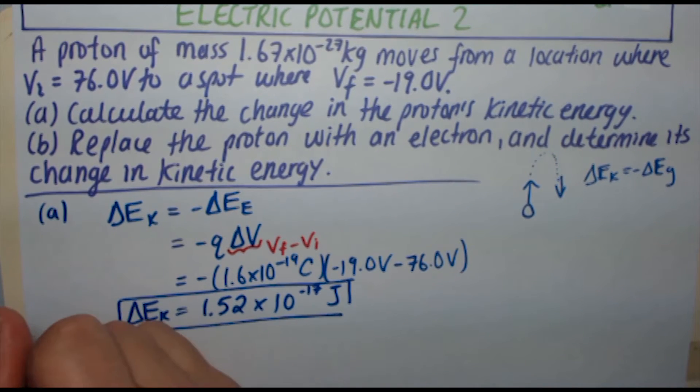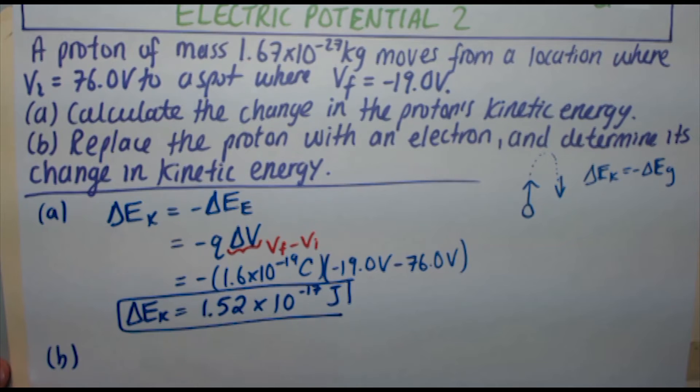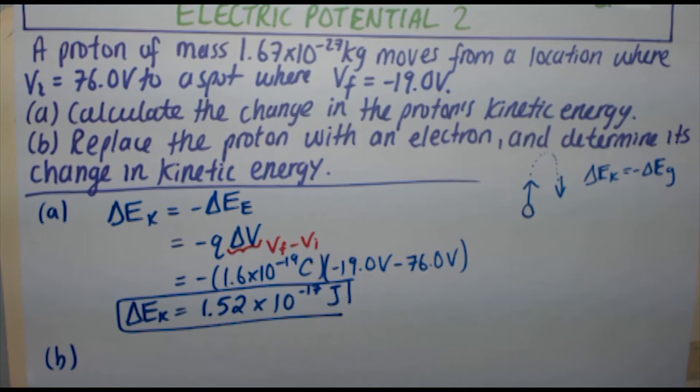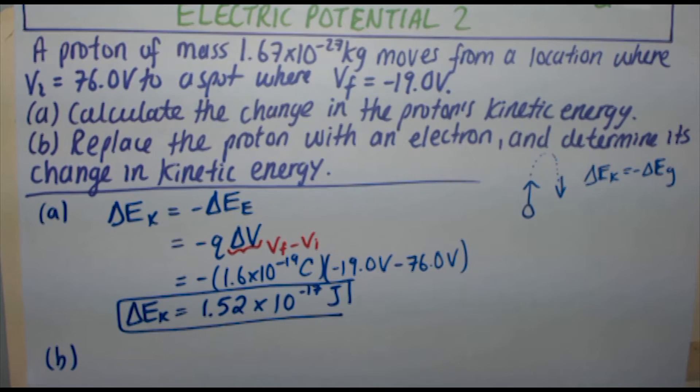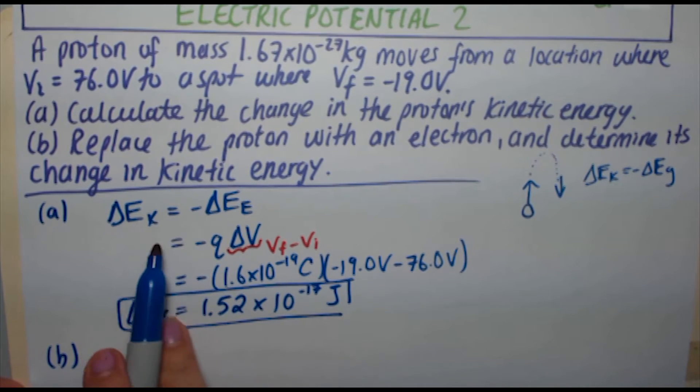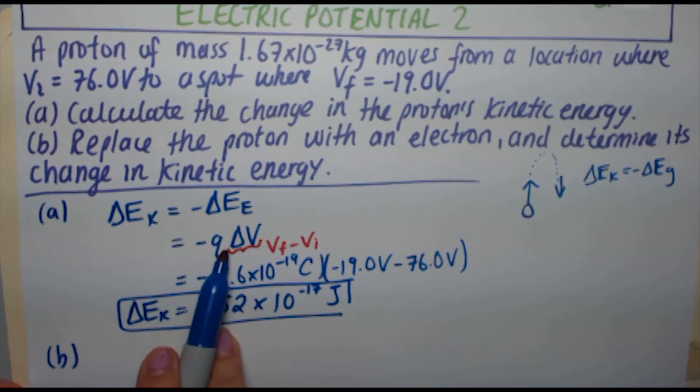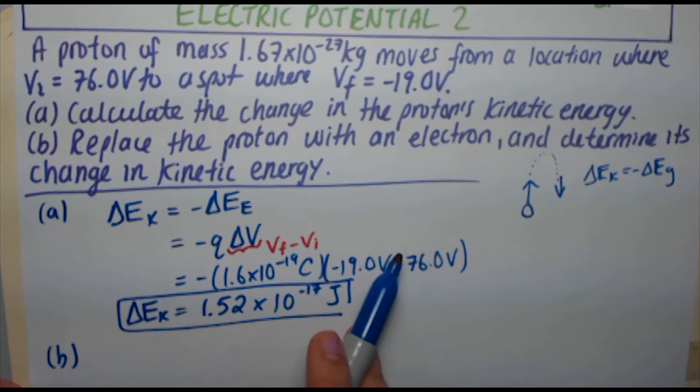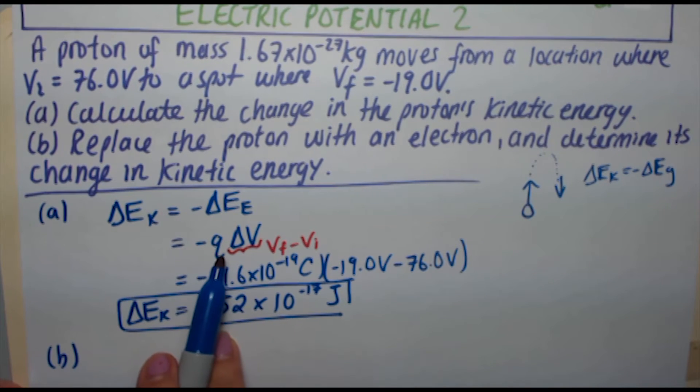Now for part B, replace the proton with an electron and determine its change in kinetic energy. Before you start crunching numbers, realize first that the change in kinetic energy is given by the formula Q delta V. The delta V is the same because the charge is moving from the same spot to the same spot. Now what's changing is the Q. Proton and electron have the same magnitude charge, just opposite sign.